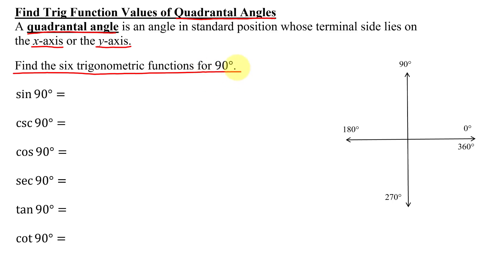First, drawing 90 degrees in standard position, the vertex is at the origin. The initial side is along the positive x-axis. My angle is positive, so I'm going to rotate counterclockwise 90 degrees. That gives me my terminal side lying on the positive y-axis. There is my angle of 90 degrees.